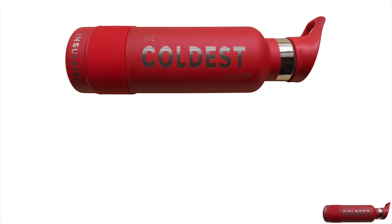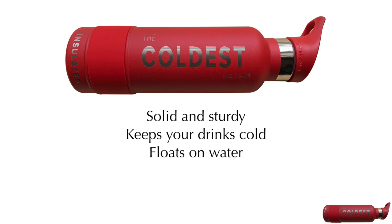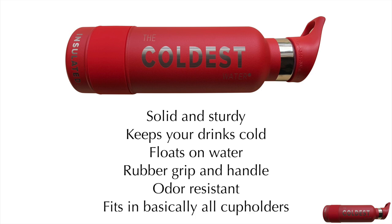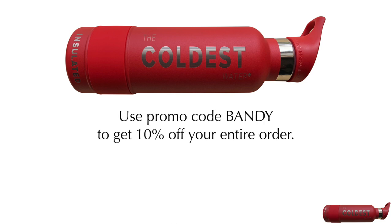Thanks to the Coldest Water Bottle Company for sponsoring this series. This 21-ounce sports bottle is solid and sturdy, keeps your drinks cold, floats on water so you don't lose it, has a rubber grip and a handle, is odor resistant, and fits in basically all cup holders. It has been perfect for me every time I go out of the house, and they have 12 different bottle types and a bunch of other products. The brand has over 8,000 five-star reviews, and they offer full refunds if you aren't satisfied. Pick up a Coldest Water Bottle today by clicking the link in the description and use the promo code BANDY to get 10% off your entire order.